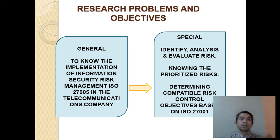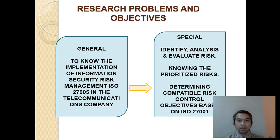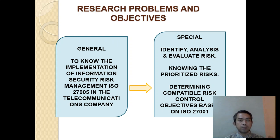Our research problem and objectives: the general objective is to understand the implementation of information security risk management using ISO 27005 in the telecommunication company. The specific objectives are to identify, analyze, and evaluate risk; to know the prioritized risk; and to determine compatible risk control objectives based on ISO 27001.